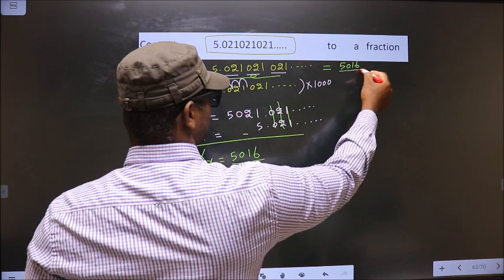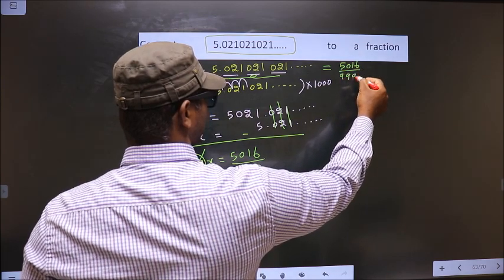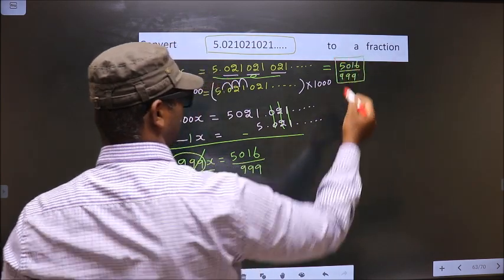this recurring decimal equals this fraction, 5016 by 999. So this is our answer.